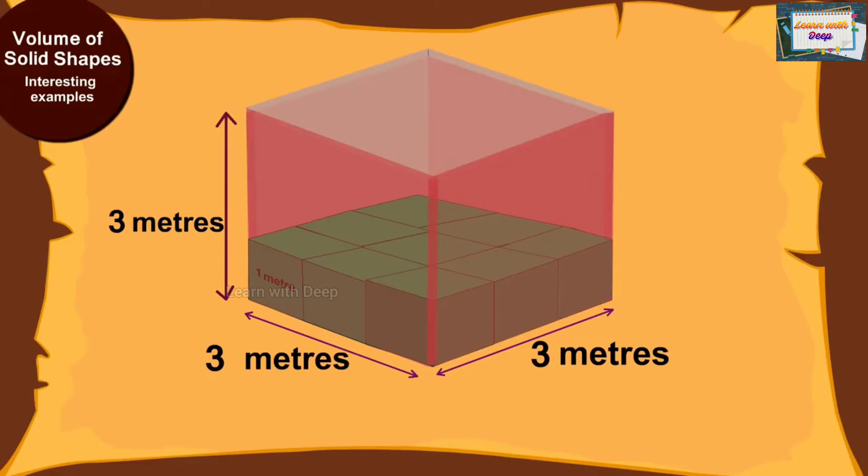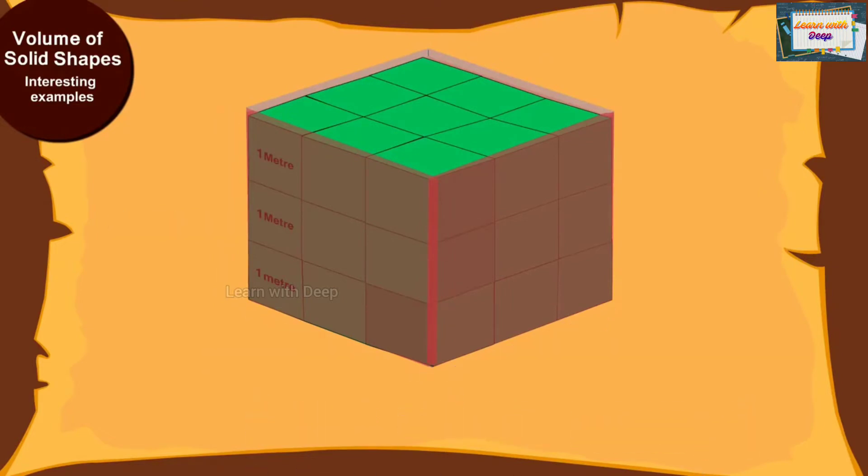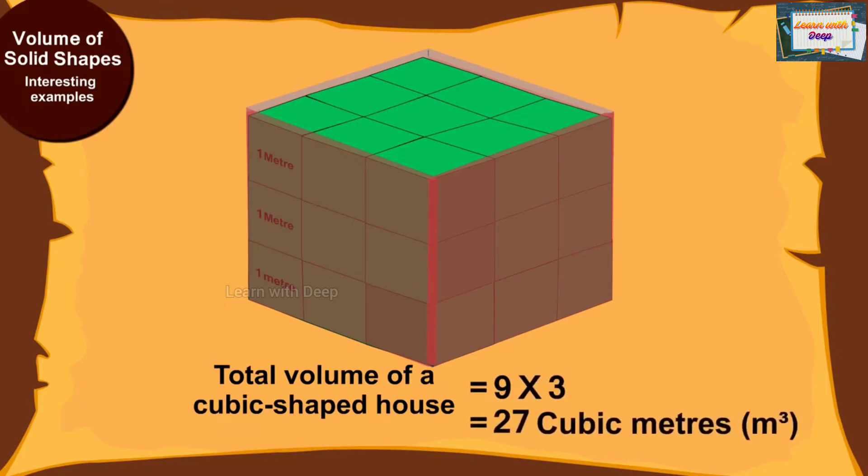In other words, a cube-shaped house will have 3 layers made up of cubic meters. The volume of each layer is equal to 9 meters cubed. This means the total volume of a cubic-shaped house will be 9 times 3, that is, equal to 27 cubic meters.